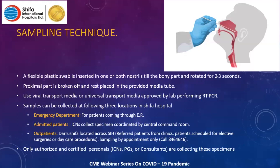At Shifa, samples are collected at three sites: the emergency department, where doctors and nurses collect swabs; admitted patients on various floors, handled by a dedicated team of infection control nurses coordinated through an appointment system at extension 1-1; and the outpatient setting, where patients scheduled for elective surgeries or day-care procedures can get sampling done by appointment. Importantly, all sampling must be done only by authorized and certified personnel, as proper sampling technique is critical for accurate results.